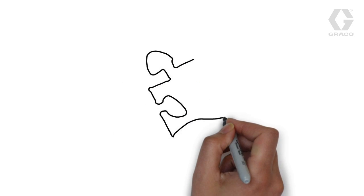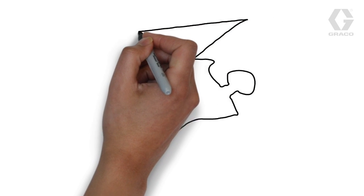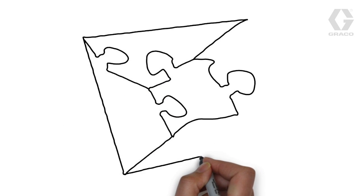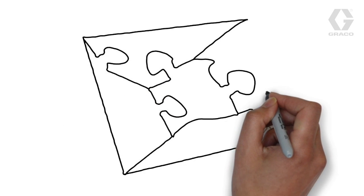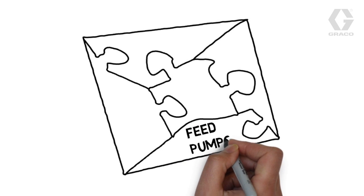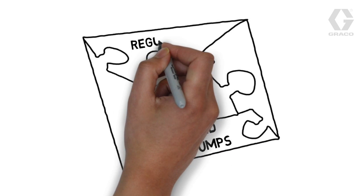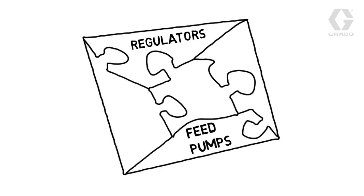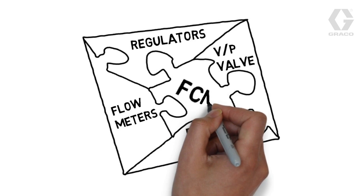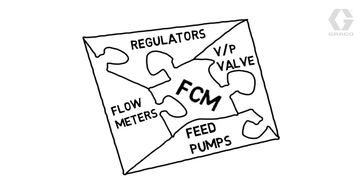Let's talk about the brains and what goes on behind the scenes. The critical components of the AGP system are feed pumps, regulators, flow meters, V2P valve, and FCM. Let me show how these components work together.